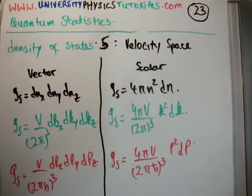So in the last few videos I've been looking at vector and scalar space, or density of states, and I've just been getting the particular expressions. So this is going to be pretty short and it's going to get the velocity space.